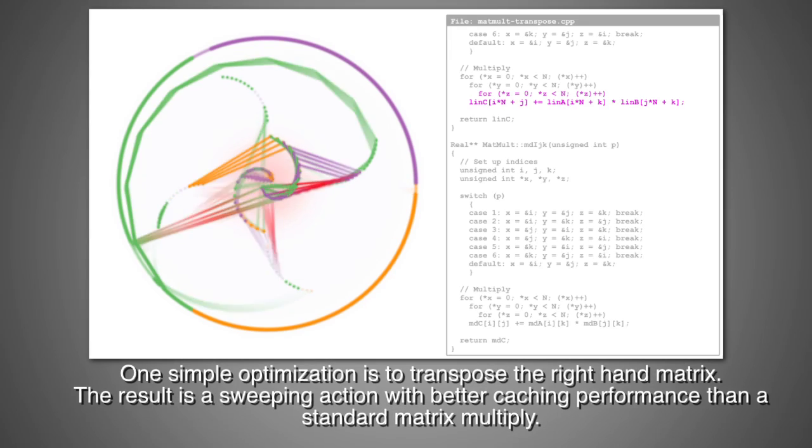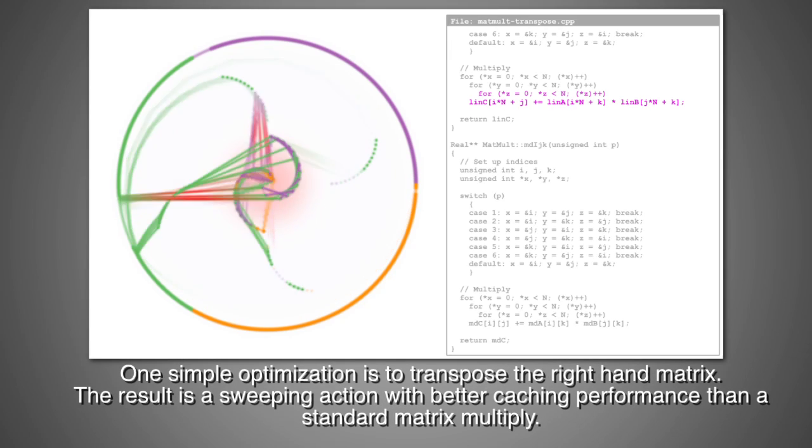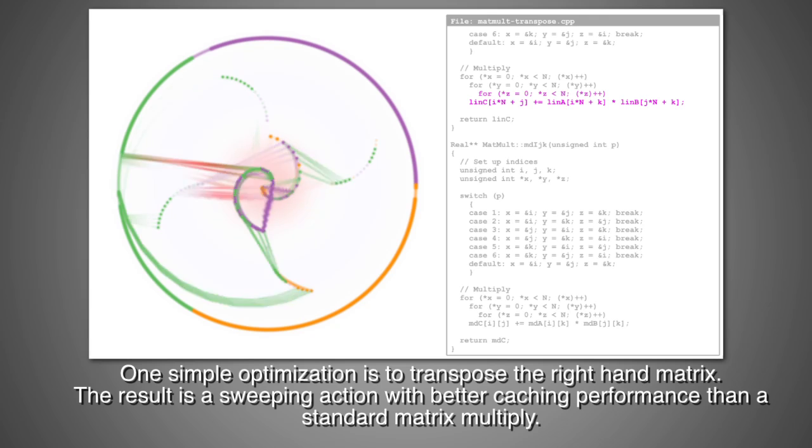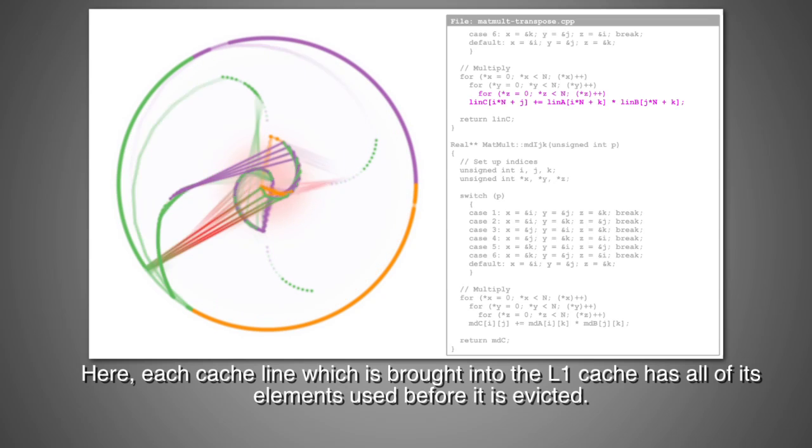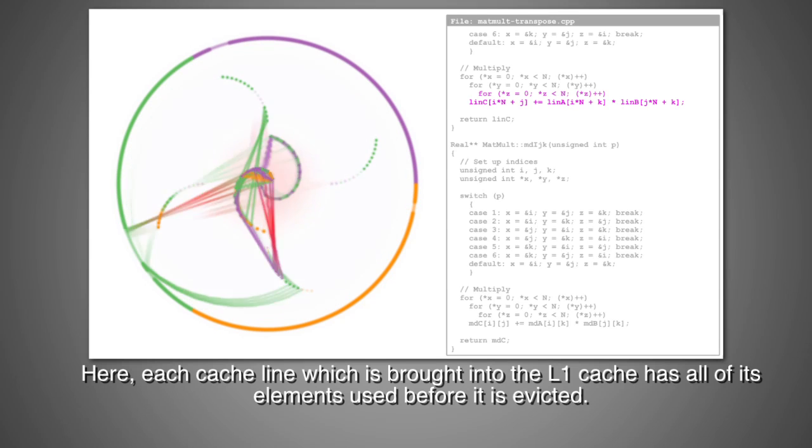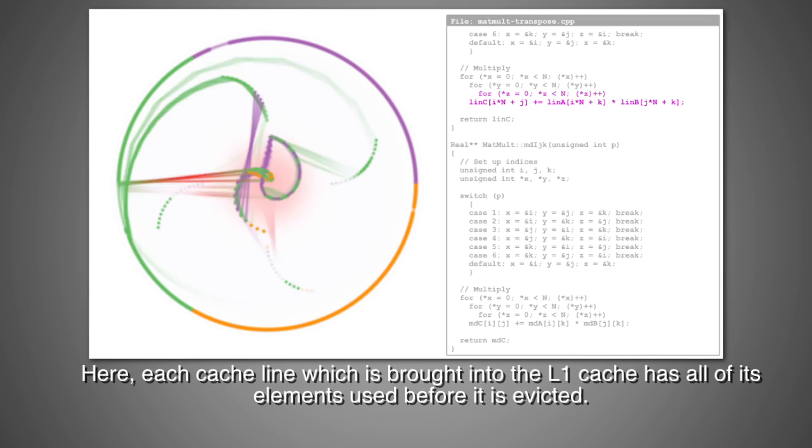One simple optimization is to transpose the right-hand matrix. The result is a sweeping action with better caching performance than a standard matrix multiply. Here, each cache line which is brought into the L1 cache has all of its elements used before it is evicted.